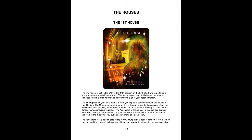The houses. The first house, which is the 6 a.m. to the 4 a.m. position on the birth chart wheel, pertains to how you present yourself to the world. The beginning or cusp of this house has special significance and is often referred to as your rising sign or your ascendant sign. The Sun represents your life's path — it is what you aspire to become through the course of your lifetime. The Moon represents your past; it is the part of you that comes out when you aren't consciously moving forward on the Sun's path, representing the way you respond to things and your unconscious reactions. The ascendant or rising sign refers to qualities you had to develop in your late teens to early 20s in order to function in society — it is the mask that you put on as you move about in society. It also refers to how your physical body is formed, how you look, the types of clothes you would choose to wear, and your personal style.